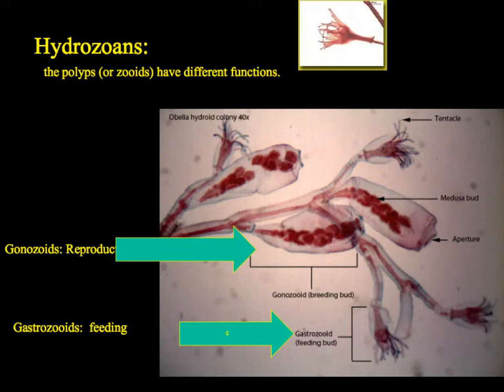The hydrozoans are the first group — the hydroids — that we're going to look at in the cnidarians. These have two different kinds of polyps: the reproductive polyps, which are the gonozoids, which produce new medusae; and the gastrozoids, which are feeding polyps. The gastrozoids stick out in the water, capture prey with their stinging cells, and then the digestive fluids get carried throughout the column, giving nutrients to the different parts of the hydroid colony.